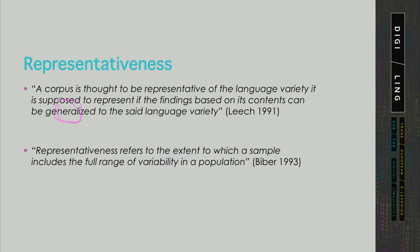The second definition reads: representativeness refers to the extent to which a sample includes the full range of variability in a population. But if we are trying to represent language, what is the population? The population could be people — it could be the speakers of the language — but in empirical linguistic research we usually consider the text as the unit of collection. So if we were building a general language corpus, the population would very likely consist of all written and spoken texts produced in that language.